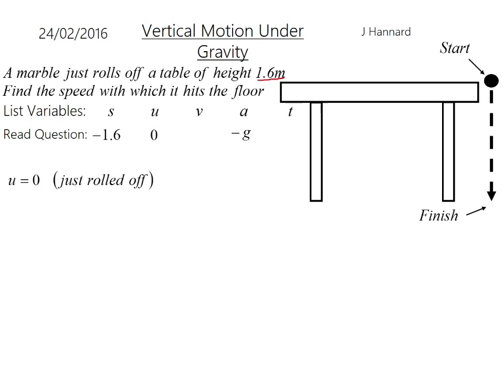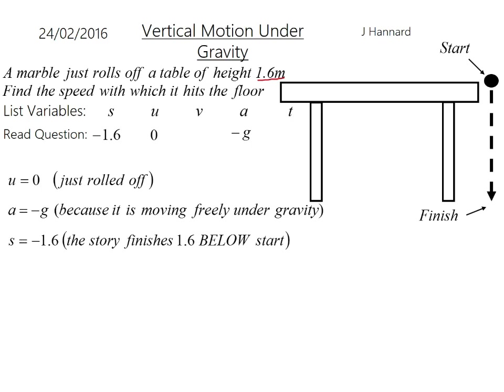And v is what we're finding out. So the u equals 0, because it's just rolled off. Your a equals minus g, because it's moving freely under gravity. And s equals minus 1.6, because the story finishes 1.6 below the start. So apply your formula. This one, I would probably go v squared equals u squared plus 2as, because we're trying to find v. And that one has all of the ingredients we want.